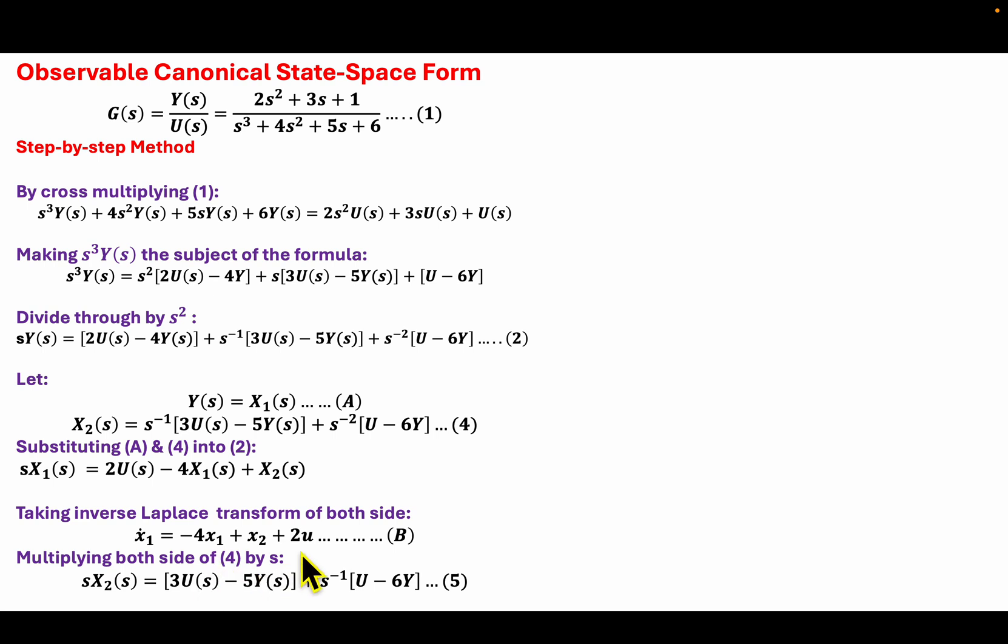Now I will move to equation 4, where I will multiply both sides of it by S in order to obtain equation 5. So now I will make another definition. I will name X₃ to be from S to the power of minus 1 up to the end of equation 5, and I will name it 6.